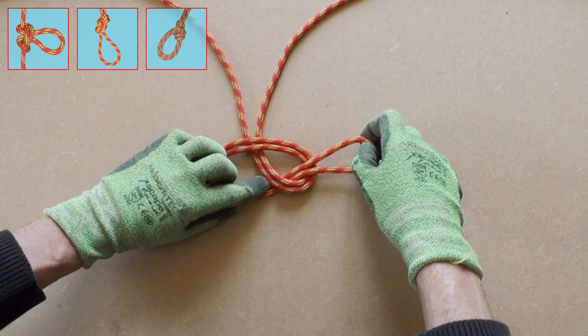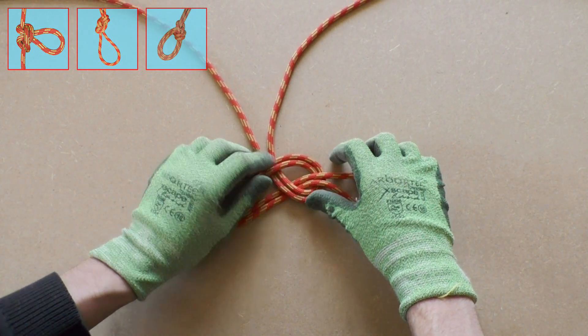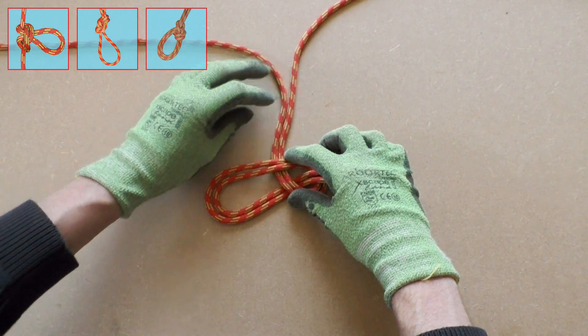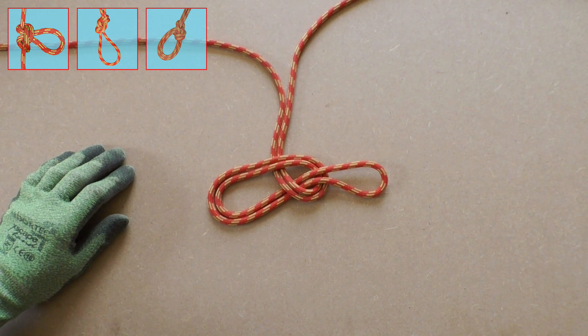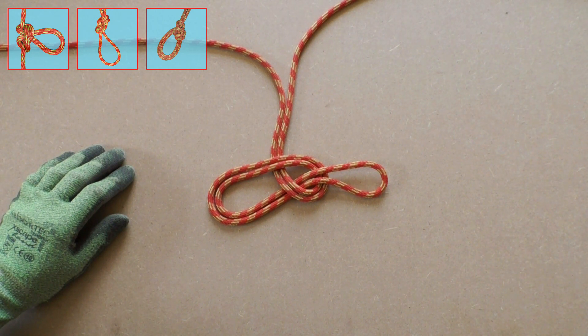Here is an overview of the bowline on a bite so far. The final step of tying the bowline on a bite is putting the loop on the right over the two loops on the left.